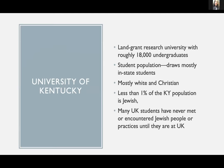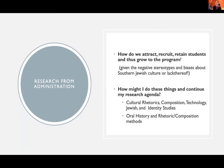The University of Kentucky is a land grant university with roughly 18,000 undergraduates — close to 25,000 or 30,000 when you add graduate, medical, and law students. The undergraduate population draws mostly from in-state students; they're mostly white and Christian. The overall Jewish population in Kentucky as a whole is less than 1%, so most students have never really met or encountered Jewish people or practices until they get to UK. Often students tell me I'm the first Jewish professor or the first Jewish person they've ever met, which presents a challenge for attracting, recruiting, and retaining students to the Jewish studies program.